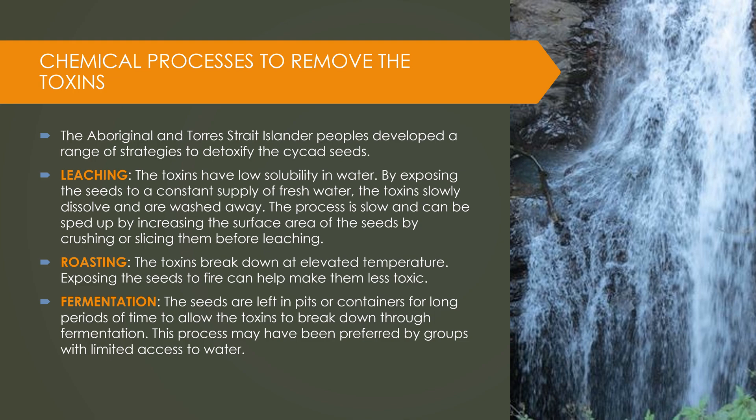The Aboriginal and Torres Strait Islander peoples developed a range of strategies to remove those toxins from the cycad seeds. Option one was a process called leaching. The toxin itself has a very low solubility in water, so putting the seeds in water will only remove a tiny bit of the toxins. To ensure that you remove all of them, you have to constantly replace the water with a fresh supply, so toxins will slowly dissolve and be washed away. You can speed up that process — because it's quite slow — by increasing the surface area of the seeds. The Aboriginal people may have sliced the seeds up or crushed them before leaching. That process is very relevant to Year 12 because it's all about solubility.